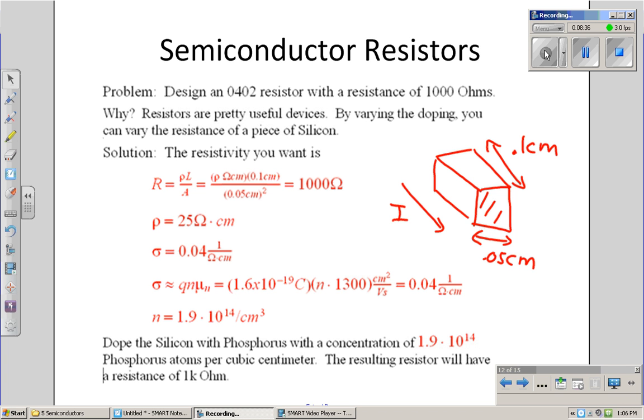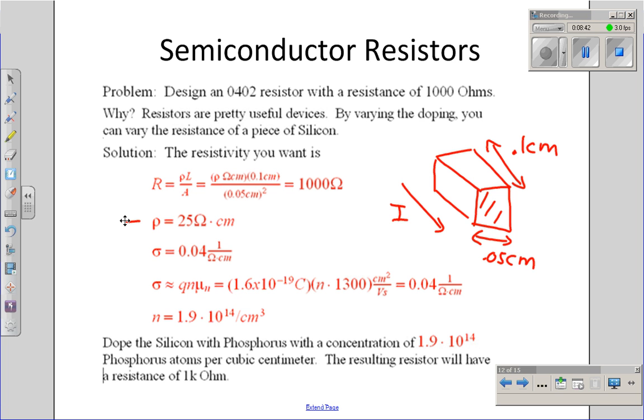To do that, I would first find the resistivity that I need. Resistivity is 25 ohm centimeters. Inverting it gives you 0.04 1 over ohm centimeters conductivity. From that, I can find the number of phosphorus atoms per cubic centimeter I need in the doping. If I dope an 0402 resistor with that much concentration of phosphorus, I'll get a 1 kiloohm resistor.